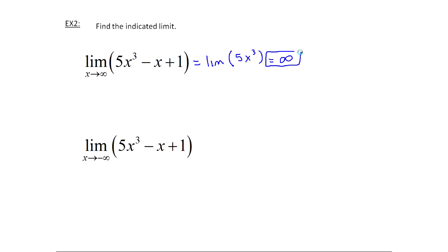Now what about minus infinity? This is equal to the limit of 5x³. As I get more and more negative: negative 1 cubed is negative 1 times negative 1 times negative 1, so it's still negative 1. Negative 2 cubed is negative 2 times negative 2 — which is positive 4 — but then times another negative 2, giving negative 8. In other words, the negative sign is sticking around. As I cube increasingly negative numbers, they get larger in magnitude but stay negative — because we have an odd power here. So this limit is going to be negative, and multiplying by the positive 5 keeps it negative. This limit is minus infinity.